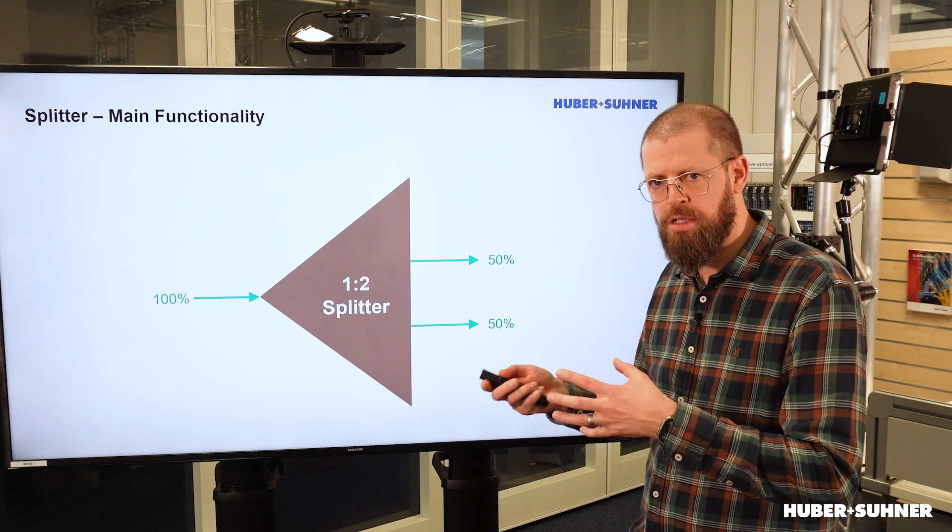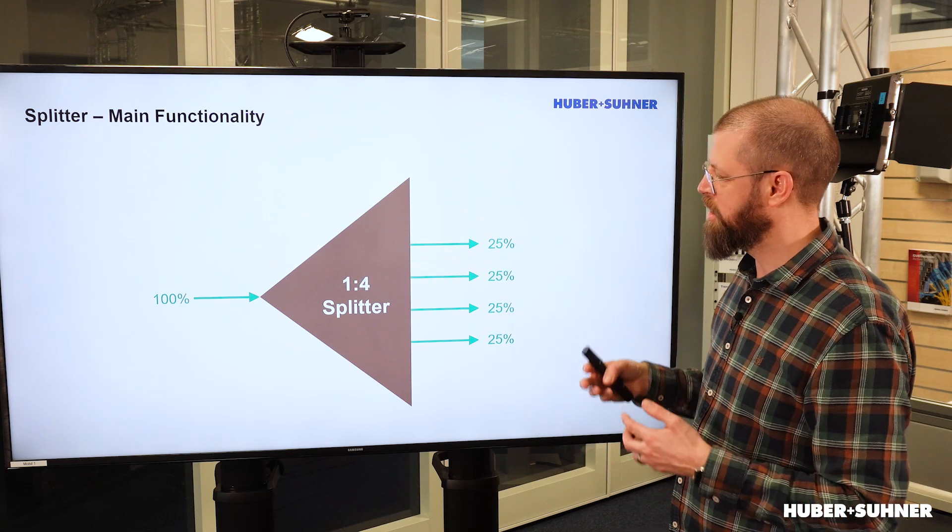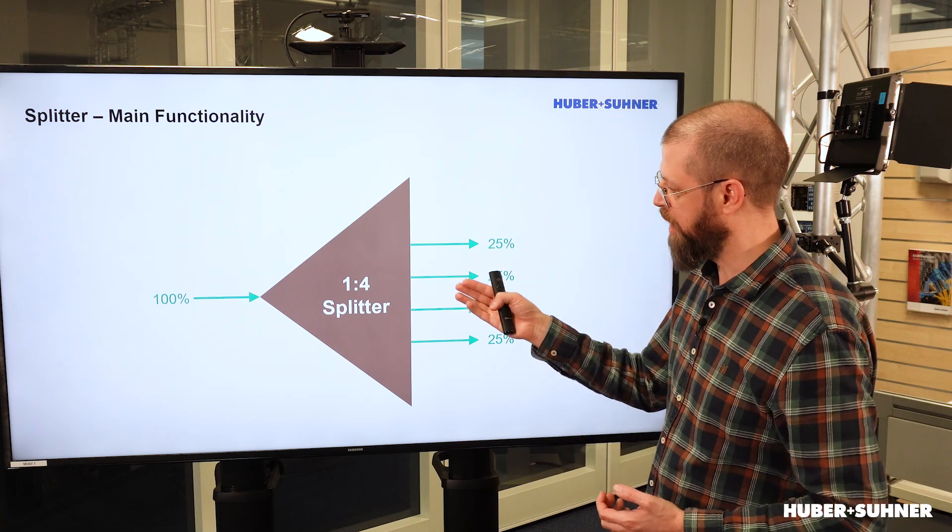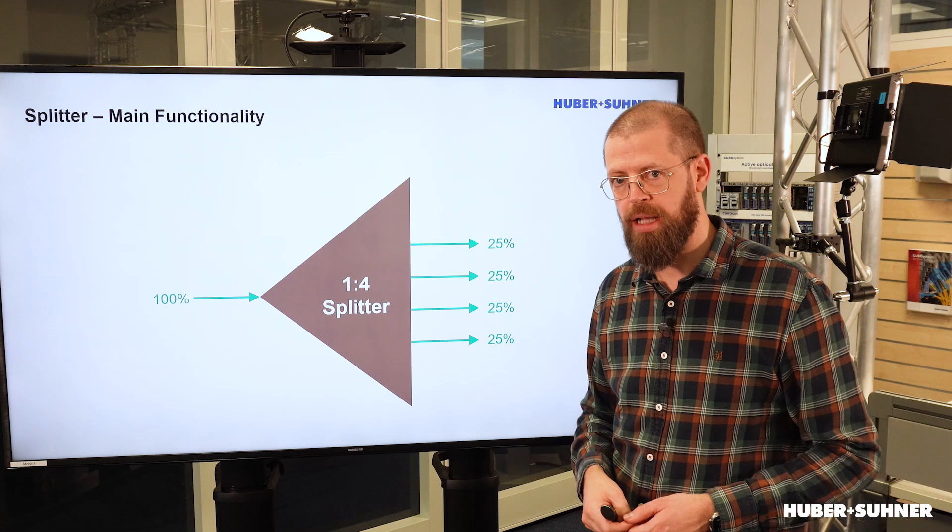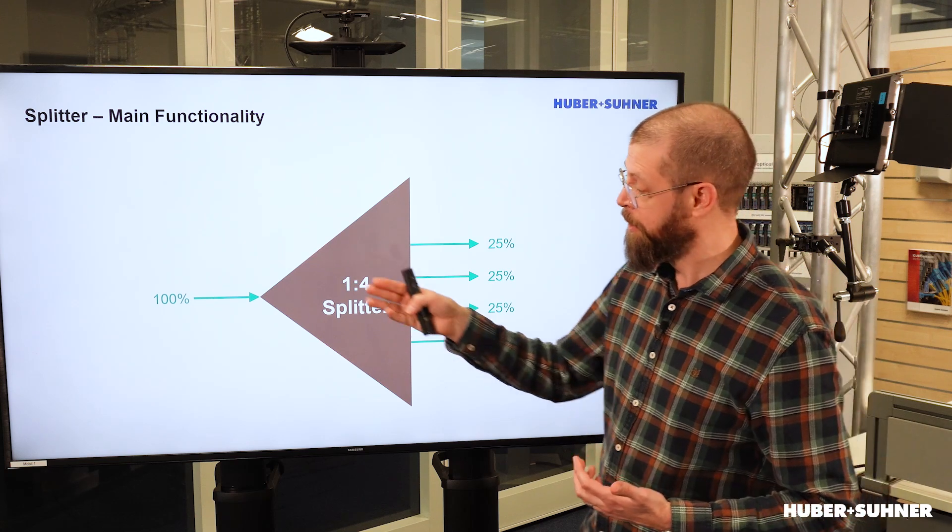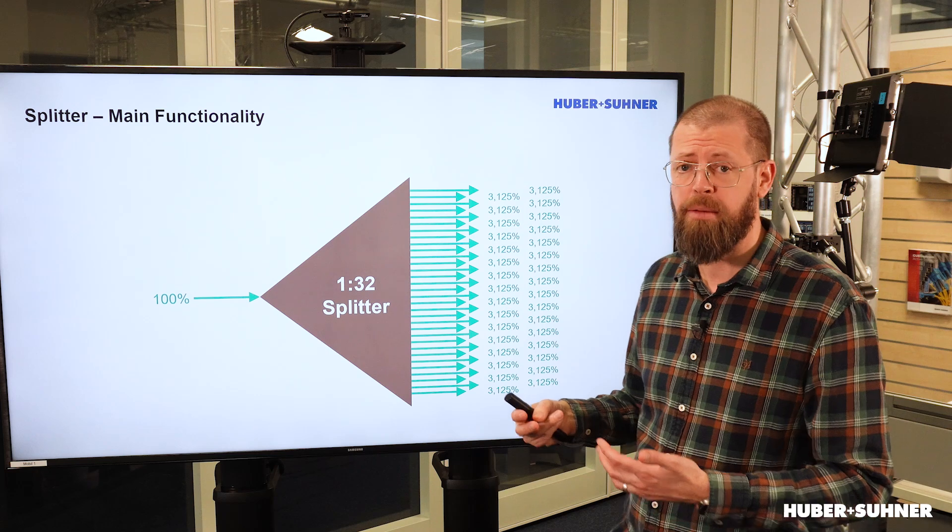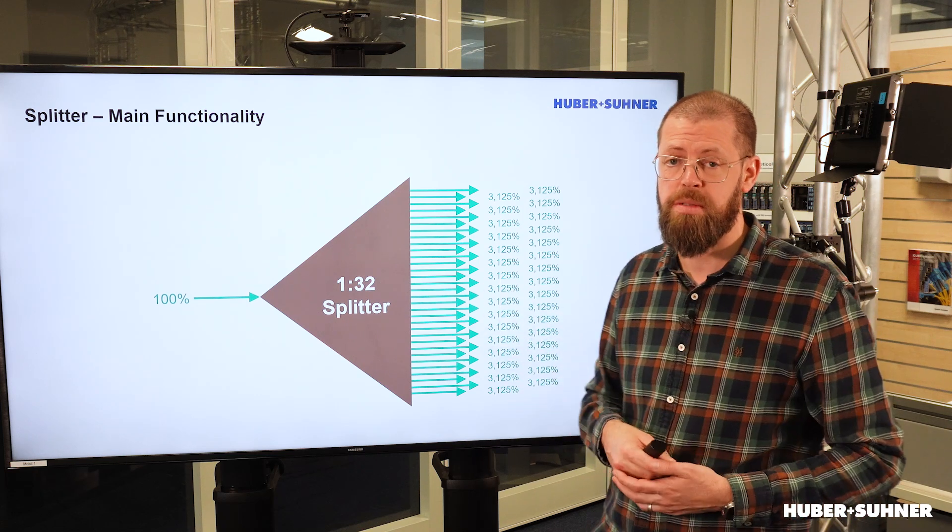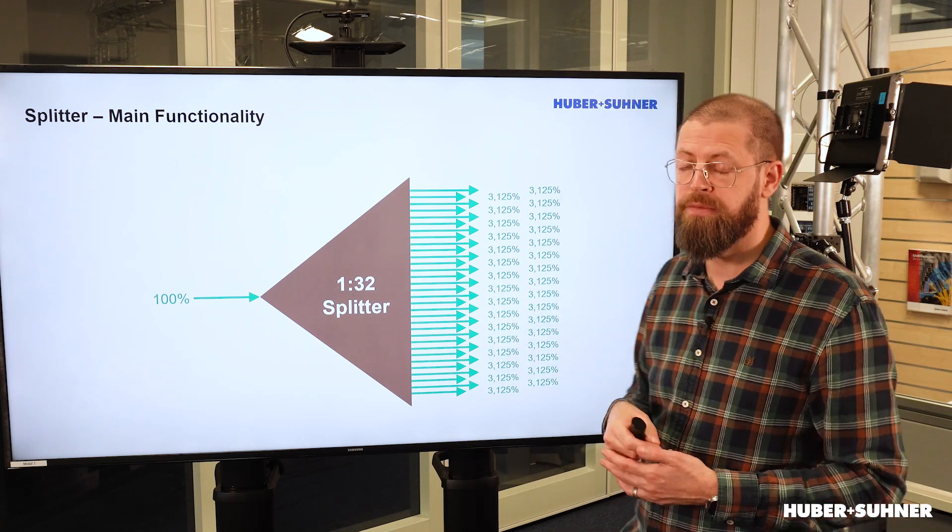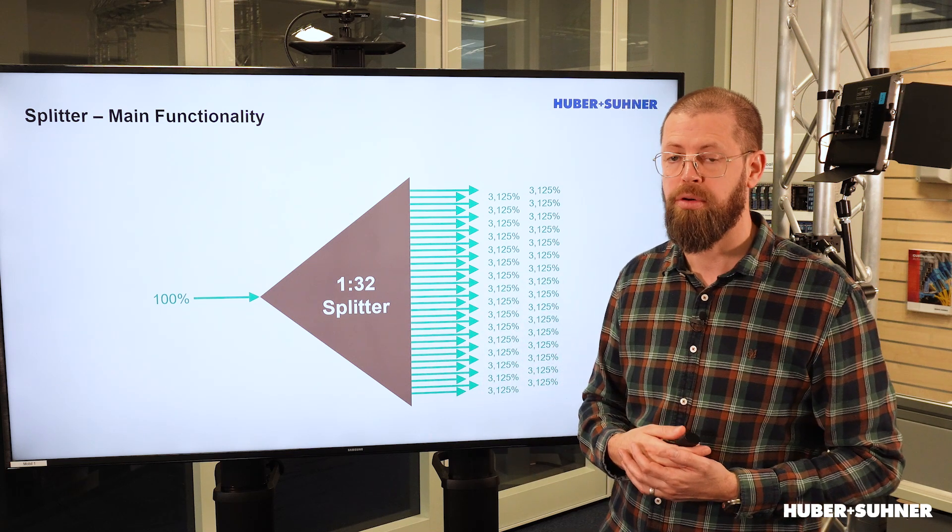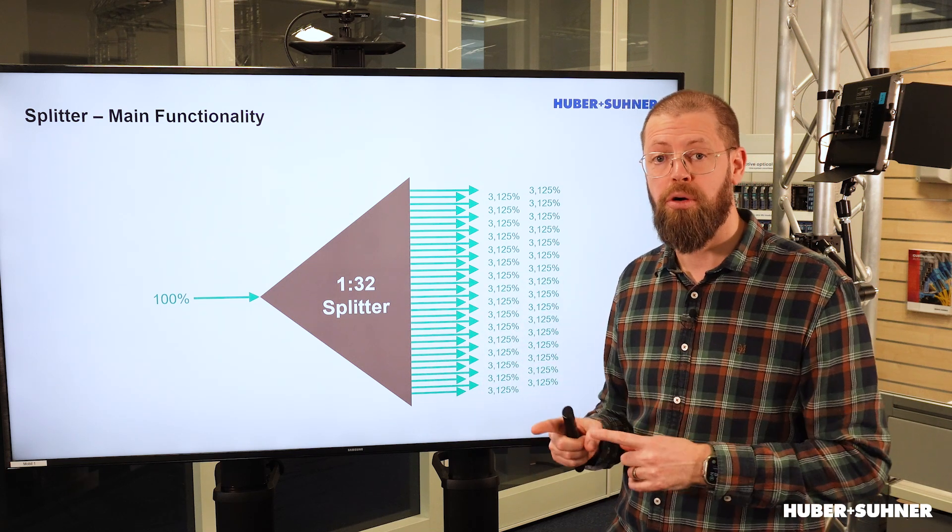Now, of course, we've also got different split ratios and that then also divides it evenly onto those outputs. So if we've got a 1x4 splitter, it means that each individual output will have 25% of the input signal power. We can go further than that. We've got a 1x32 splitter, meaning that each individual output will have 3.125% of that optical power of the input signal.